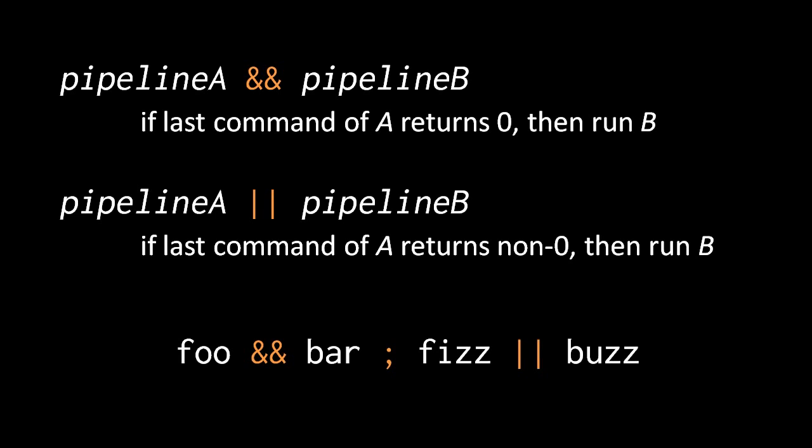For example: foo is executed, and if its exit status is 0 then bar is executed, otherwise it's skipped. Then whether or not bar ran, the fizz command executes because it's separated by a semicolon. The semicolon has lower precedence than either the double ampersand or double pipe, so you can think of there being implicit grouping around the first pair and the second pair of commands. If fizz returns something other than 0 then buzz runs; if fizz returns 0, buzz does not run.